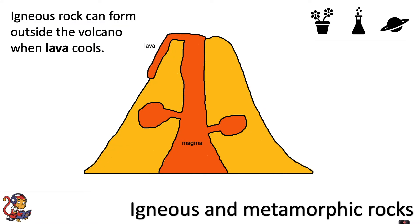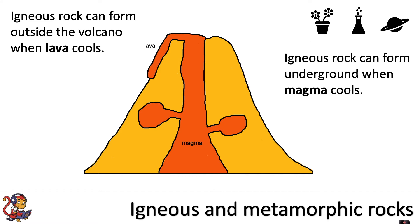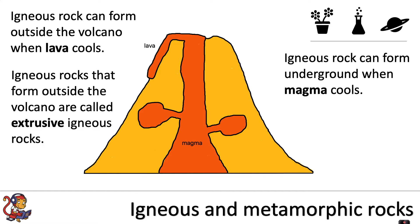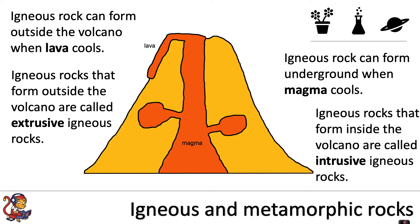Igneous rock can form outside the volcano when lava cools, or underground when the magma cools. Igneous rocks that form outside the volcano are called extrusive igneous rocks, and igneous rocks that form inside the volcano are called intrusive igneous rocks. There are differences between these two which we'll look at now.